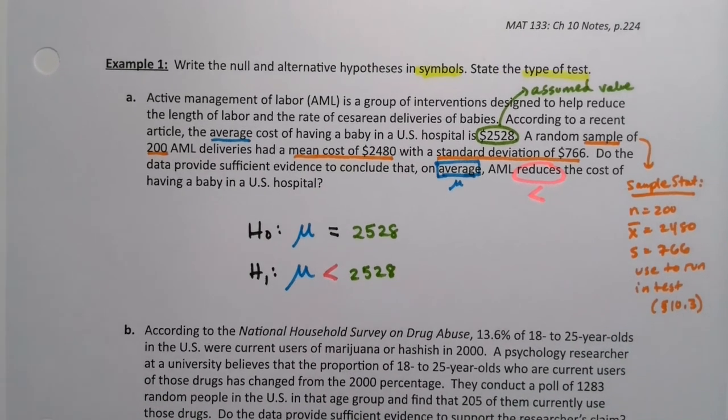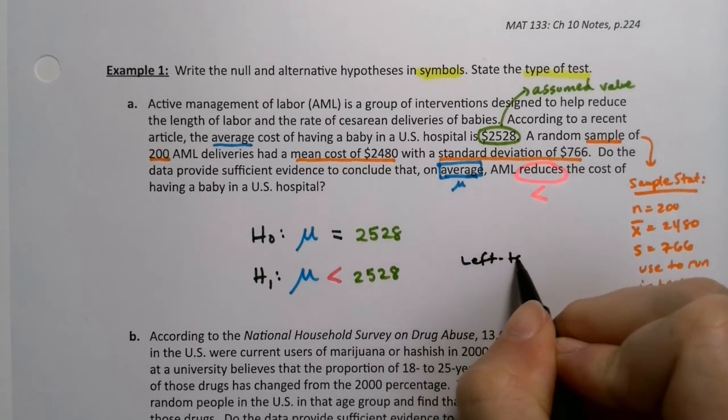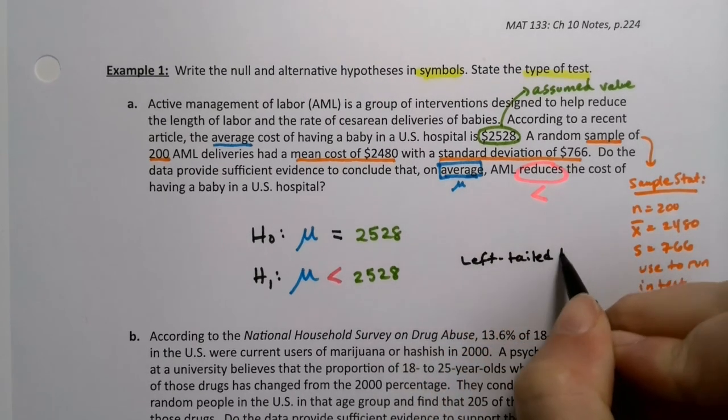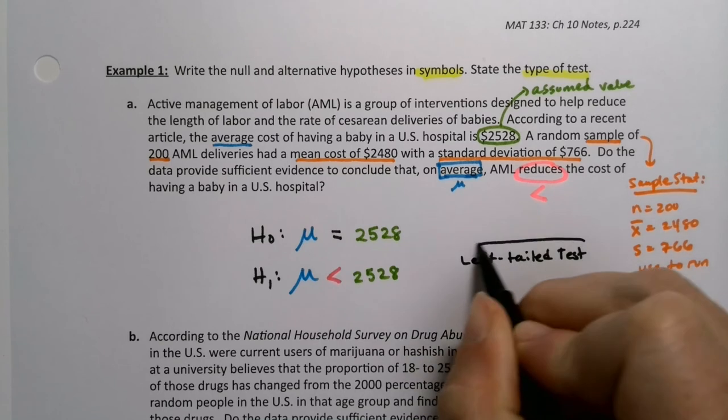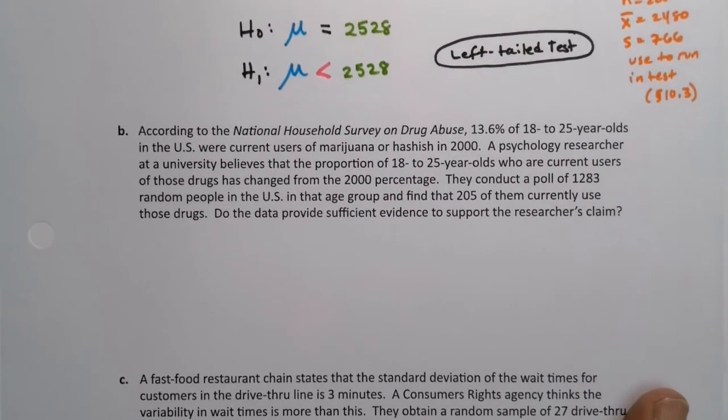So reduces means it's going to be less than right there. Now, what kind of test was this? Because it asked us, what's the type of test? This is a left-tailed test. Which also is a one-tailed test, in case you're wondering, because left-tailed tests are one-tailed tests.